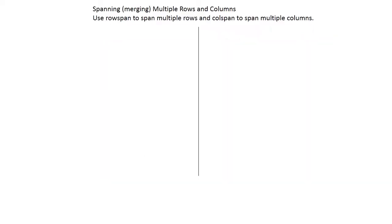Now let's move on to spanning. When we need to merge multiple cells or columns into one, we use rowspan to span multiple rows and colspan to span multiple columns.